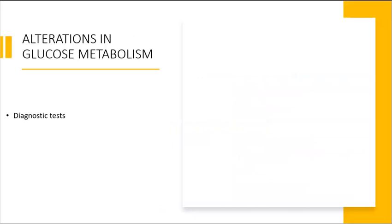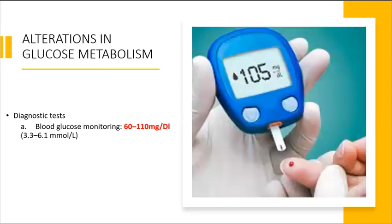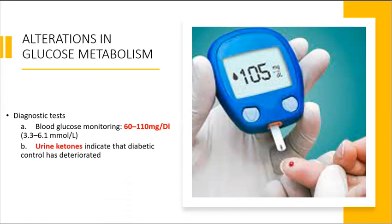Presence of sugar in the urine is a sign of diabetes and calls for immediate blood glucose tests. If we need to carry out this blood glucose monitoring, we want to see between 60 to 100 mg per dL. That is a normal range in fasting blood glucose. Urine ketones indicate that diabetes control has deteriorated and the body has started to break down stored fat for energy.